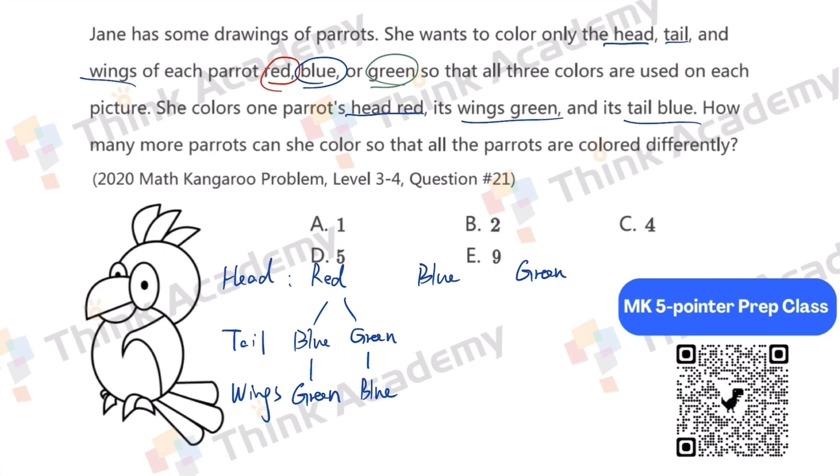And if the head is blue, the tail can be red or green. Then the wings can be green or red.